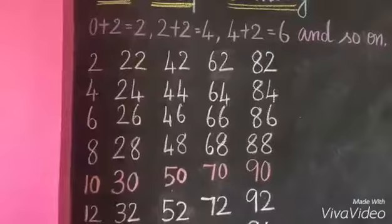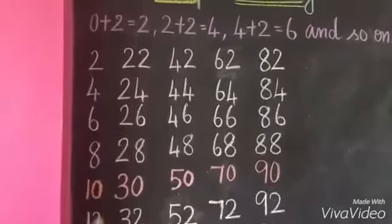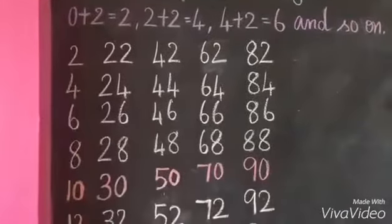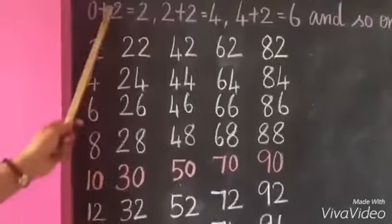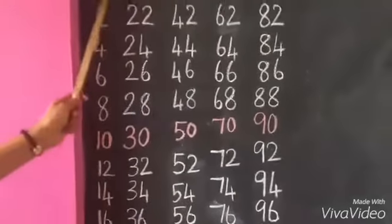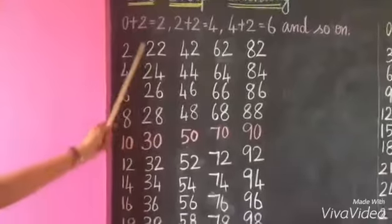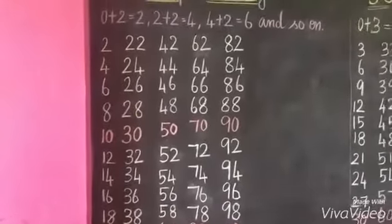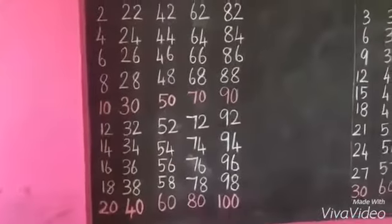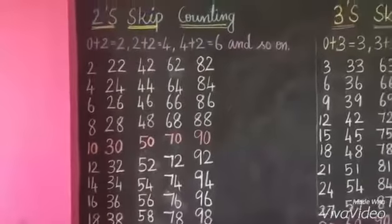Now, we add the same number in our mind. 10 plus 2, 12. 12 plus 2, 14. 14 plus 2, 16. 16 plus 2, 18. 18 plus 2, 20. And so on. Dear students, continue the Skip Counting up to 200.